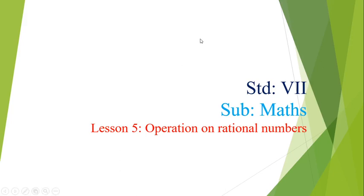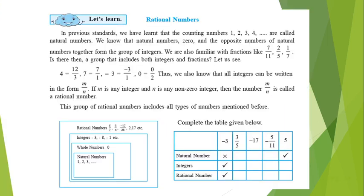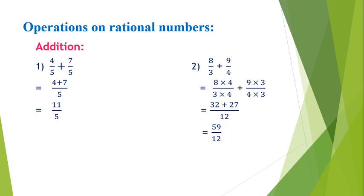Hello students, let's start the first period of lesson number 5: operations on rational numbers. We have discussed rational numbers — numbers written in the form of numerator and denominator, only when the denominator is not zero. We can also call them fractions. We will discuss four operations: addition, subtraction, multiplication, and division, and at the end, multiplicative inverse.